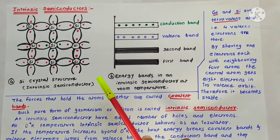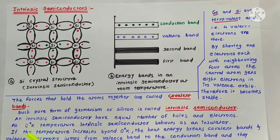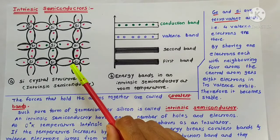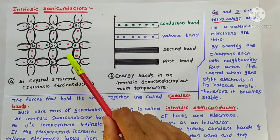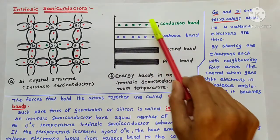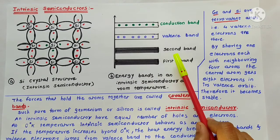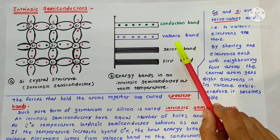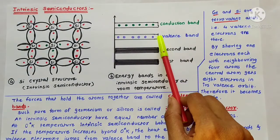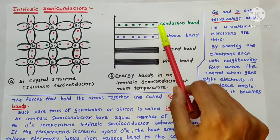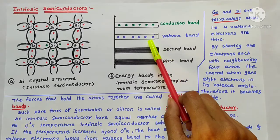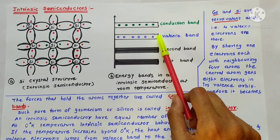If the temperature is increased beyond 0 degree Kelvin, or when extra energy is supplied to this crystal — either by applying voltage or applying light — electrons become free from the covalent bond and may go into the conduction band. You can see the energy band in an intrinsic semiconductor at room temperature. When extra energy is supplied, valence electrons transfer from the valence band to the conduction band, and the vacancy created in the valence band is called a hole.